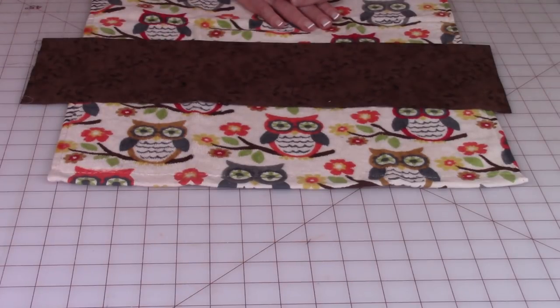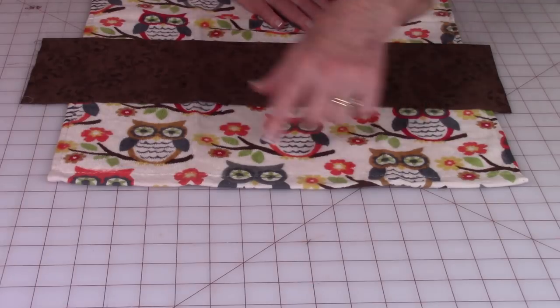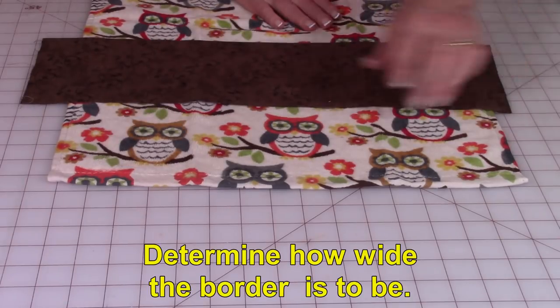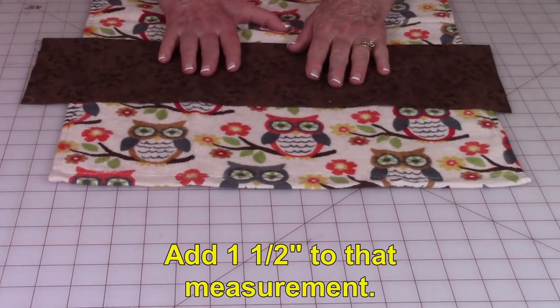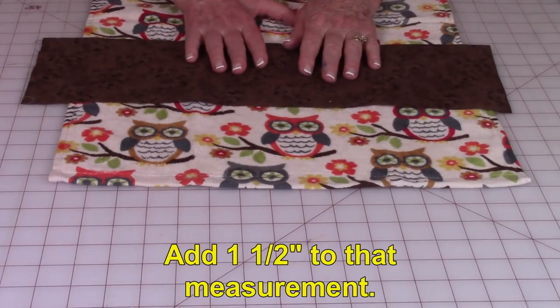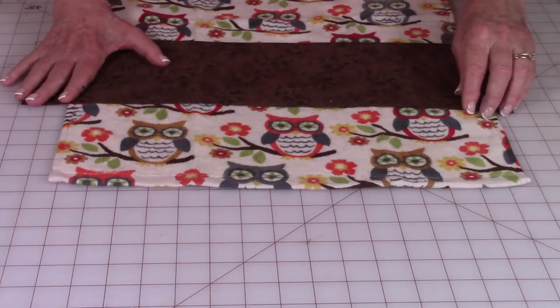Then determine how wide you want this to be at the bottom. This is about a 5 inch area right here. So add at least another inch and a half to that so you can hem and cover your raw edges.